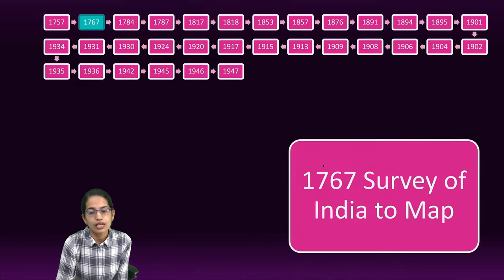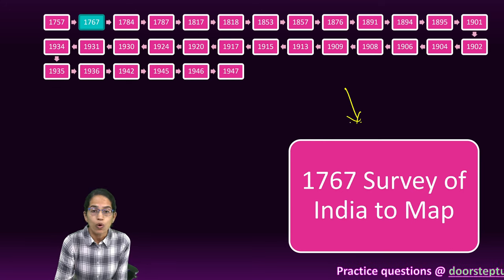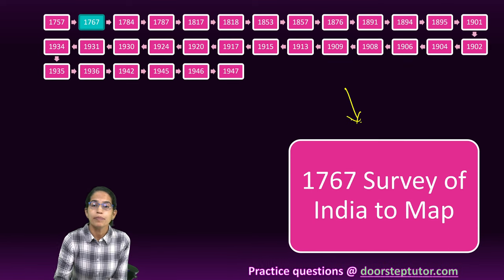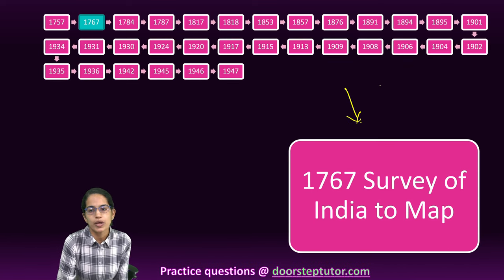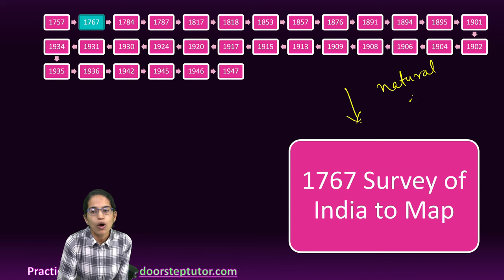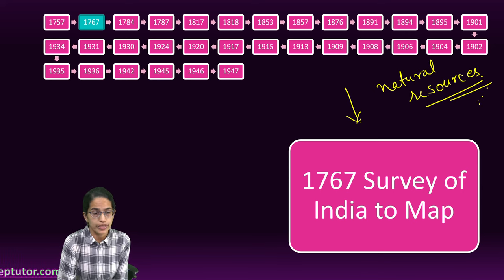In 1767, the Survey of India was established during the British era. The idea was to trace the major areas of India where natural resources could be found — regions which were rich and could be exploited in the future.